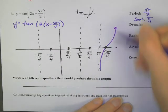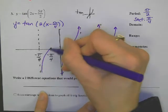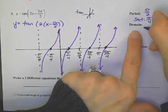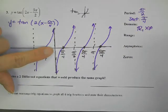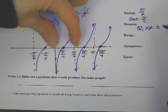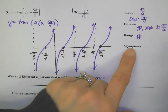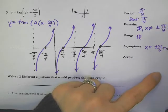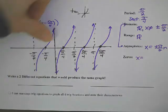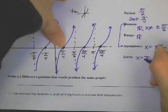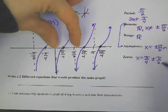Here's a regular tangent graph — up, up, up and away — all of them looking the same. The domain is all reals except x cannot equal zero plus or minus π over 2·n. Range is all reals. Asymptotes at plus or minus π over 2·n. There are some zeros: the first positive x-intercept is at π over 4, plus or minus π over 2·n.